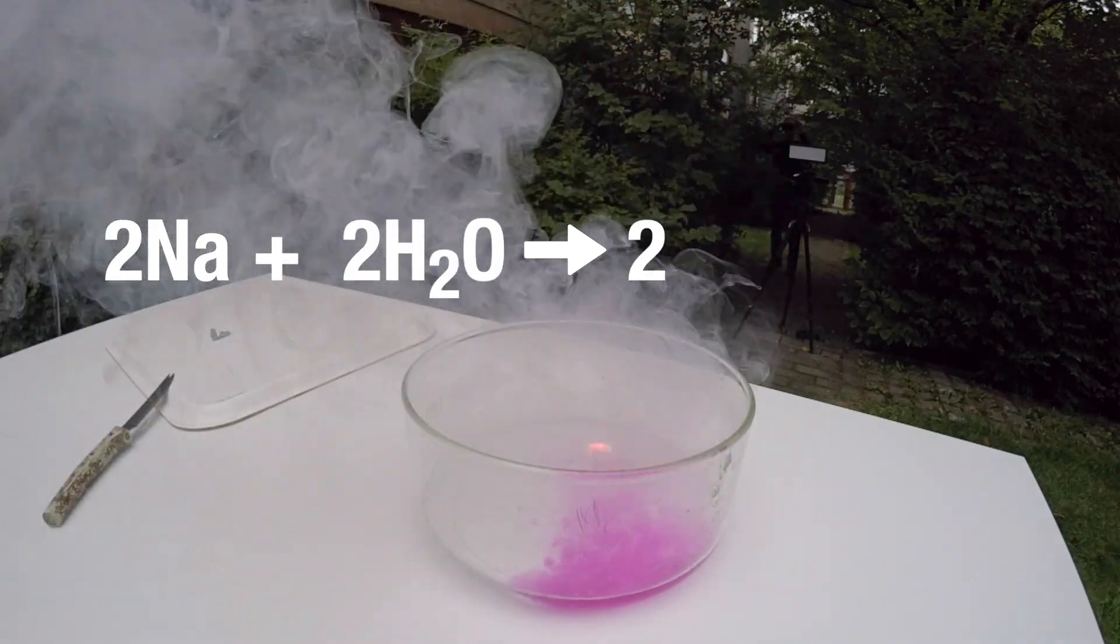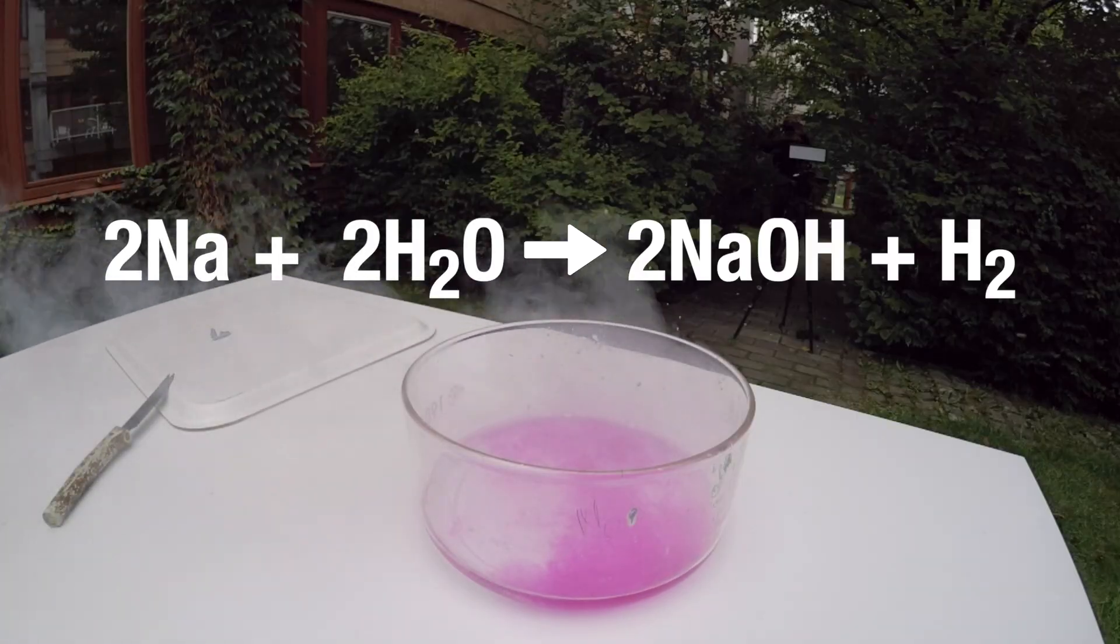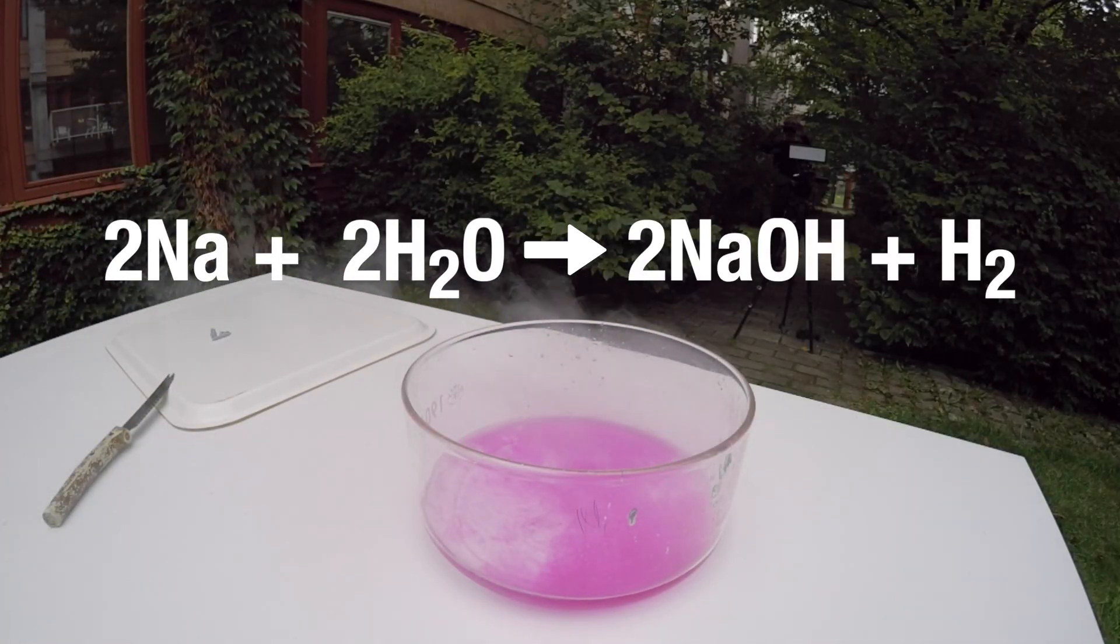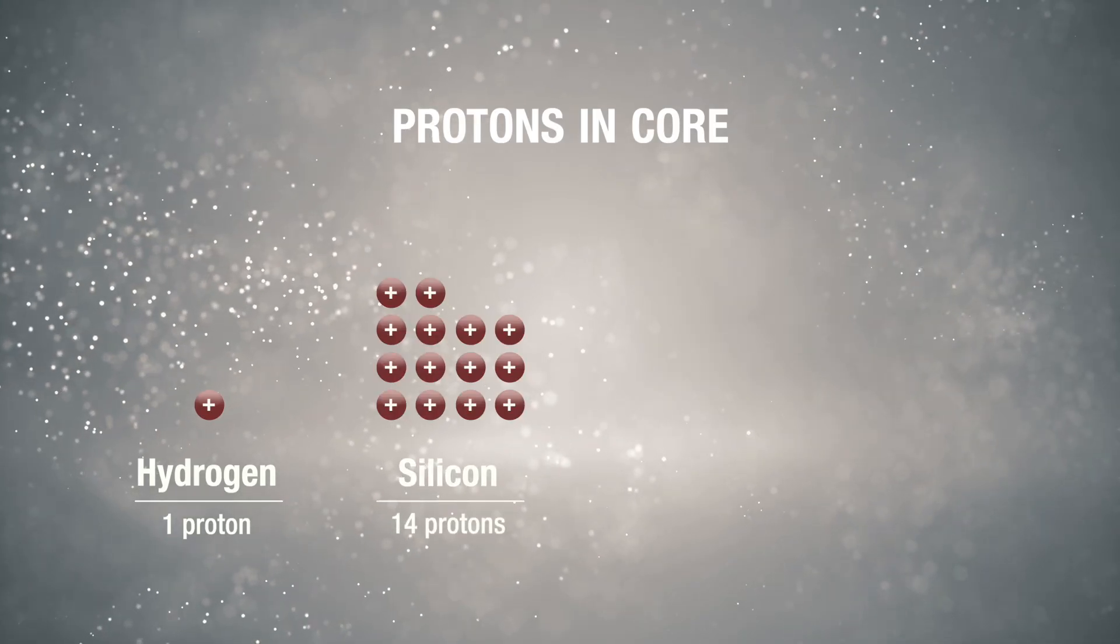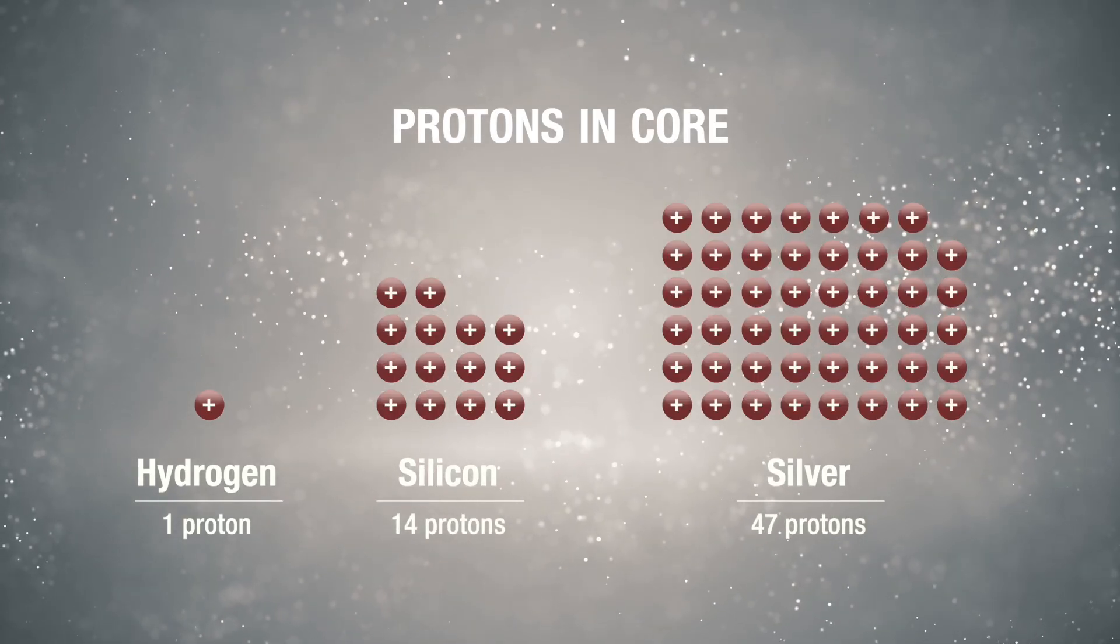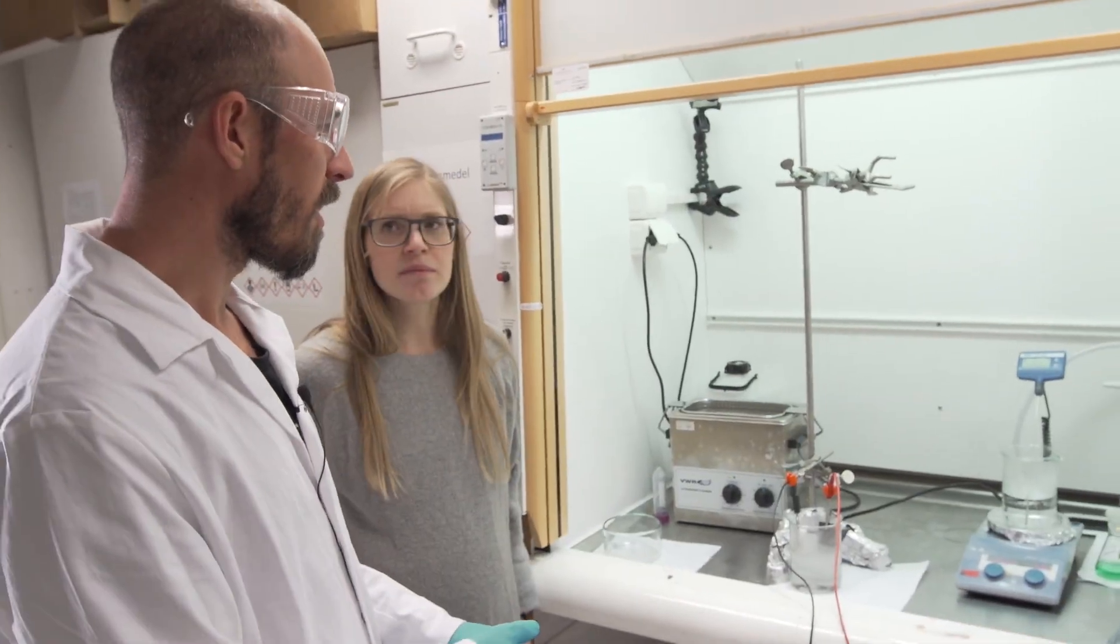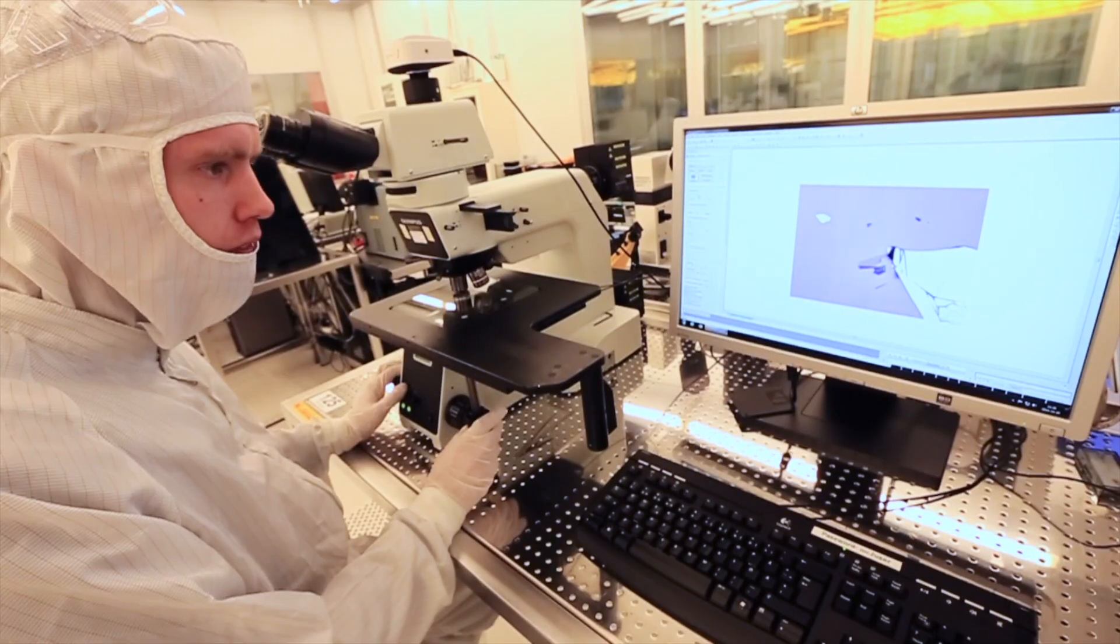Different atoms can then bind to other atoms in different combinations and build countless types of molecules. Even if the differences between the different types of atoms is just a couple of protons here and there, these small differences are essentially what changes the chemical properties of the different elements.